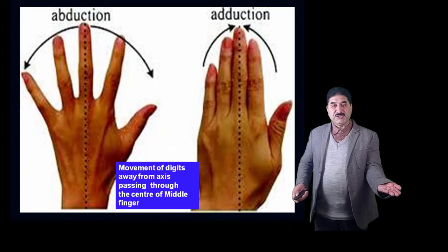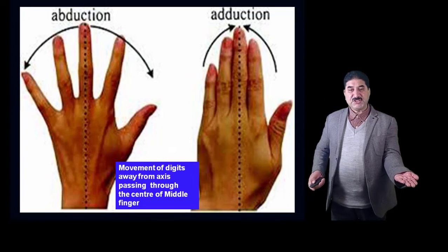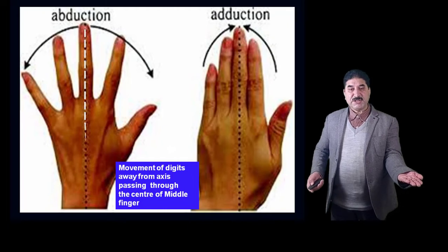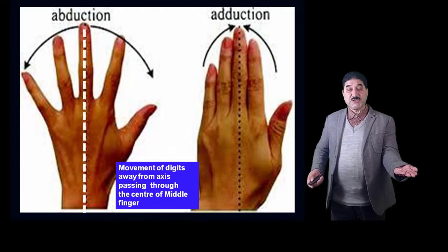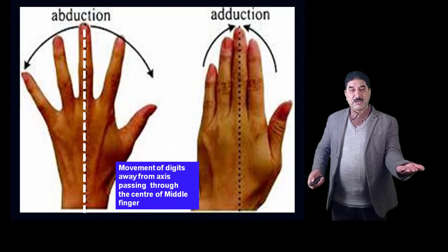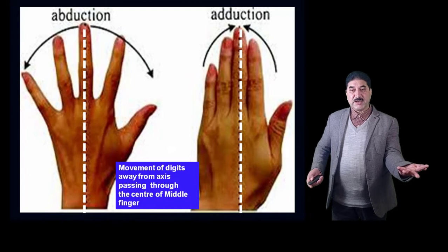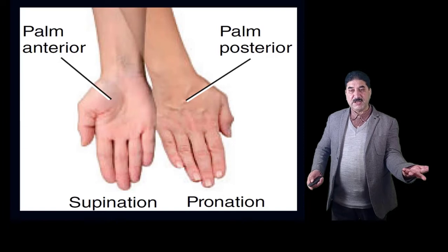In the case of the digits, abduction is defined as the movement of the digits away from an axis passing through the center of the middle finger. As shown in this diagram, the axis passes through the center of the middle finger, and during abduction the digits on either side move away from this central axis. During adduction, the digits move towards the central axis represented by the plane passing through the center of the middle finger.